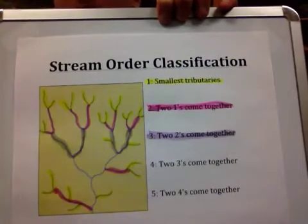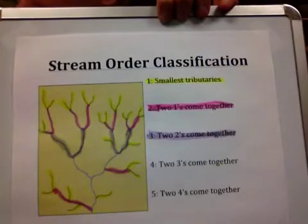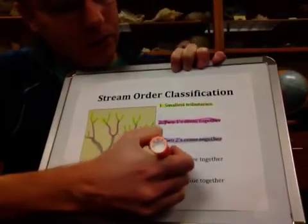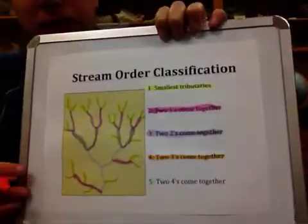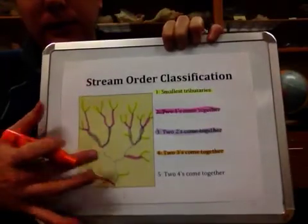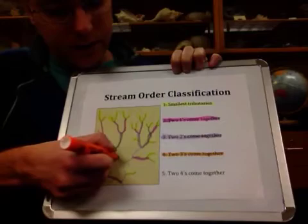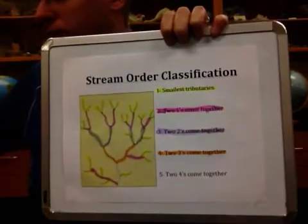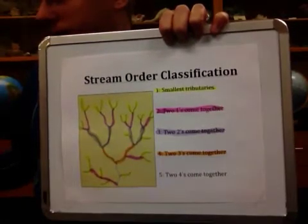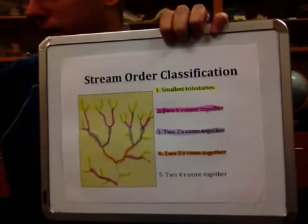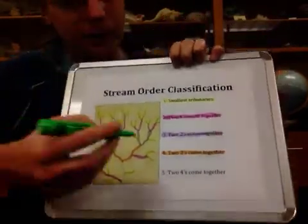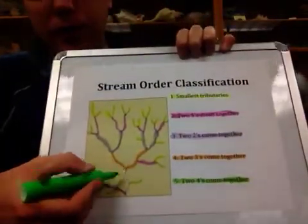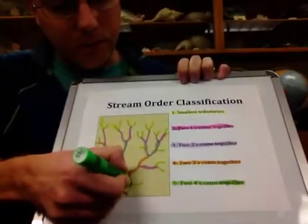Where two third order streams come together — as you can probably guess the pattern by now — we have a fourth order stream. I'm going to highlight these in orange where two third orders come together. We get a fourth order until it hits an intersection. Then where two fourth order streams come together, we move up another number and have a fifth order stream, which I'm going to highlight in green.